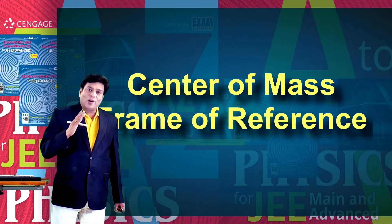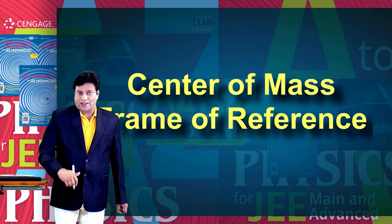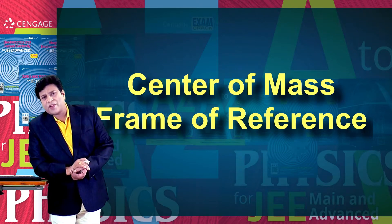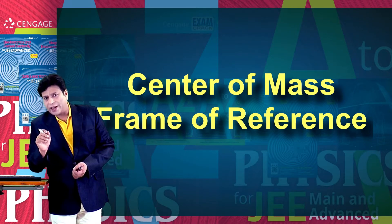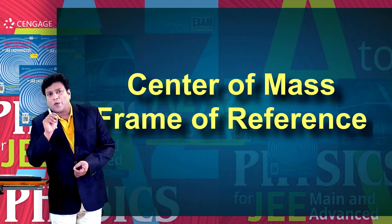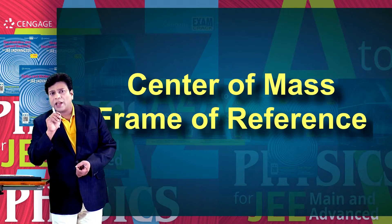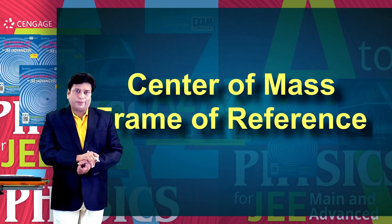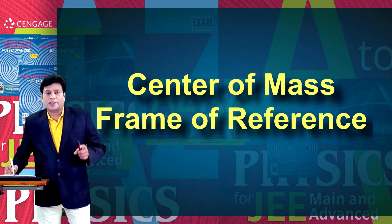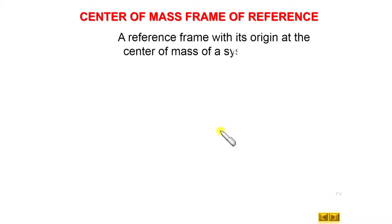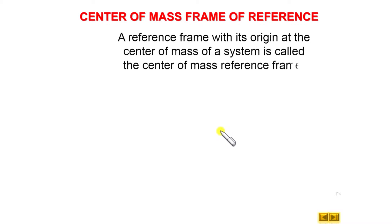Let us discuss the frame of reference. We know a frame of reference is a set of coordinate axes where the observer locates himself at the origin. So, a frame of reference with its origin at the center of mass of the system is called the center of mass frame of reference.